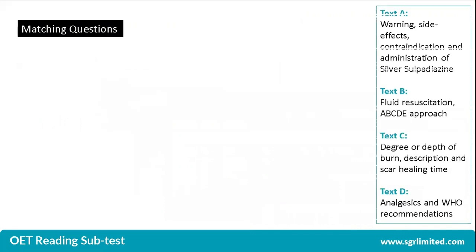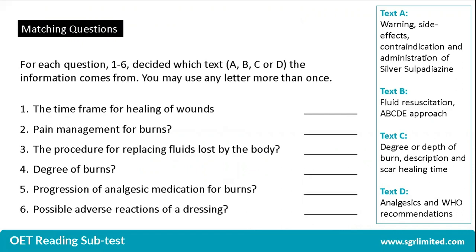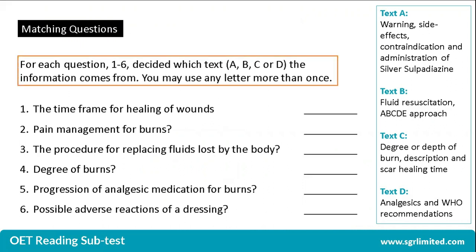Once you have understood the texts, you'll now need to go into the first part of your questions. This is the matching questions section. These are typically anywhere between five to seven questions. For each question, you'll need to decide whether text A, B, C, or D is the right answer. You are allowed to use any letter more than once.